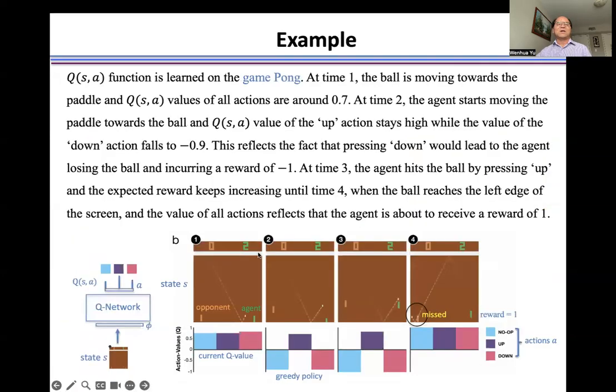So let's see a very simple example. This is a game, Pong is one of the Atari games. To find the control policy, first of all, we need to calculate the Q value, we need to estimate the Q value function.